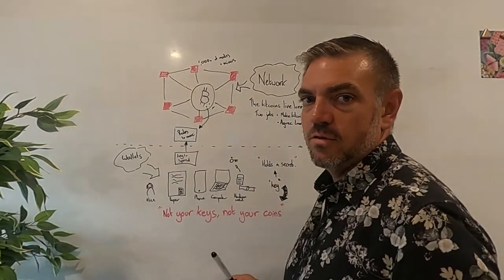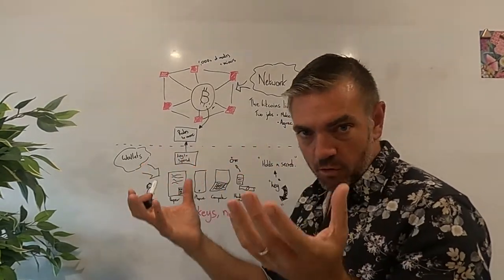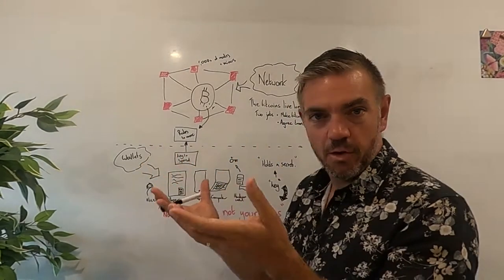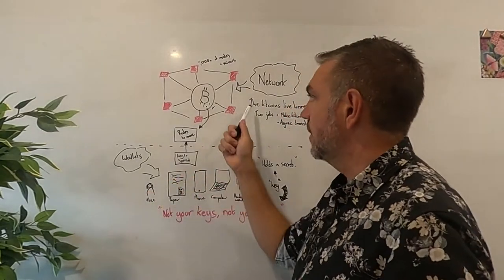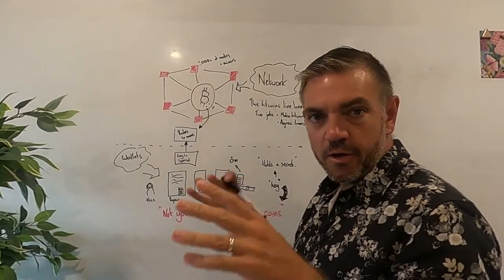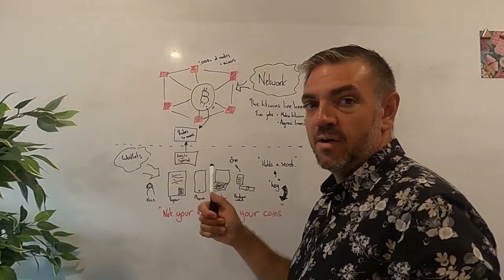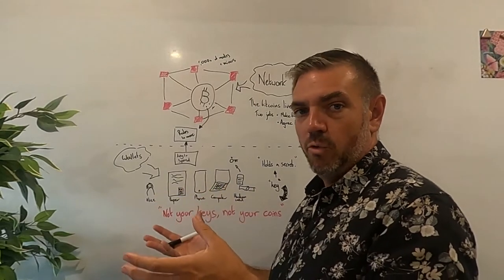Now, each of these has a job. The job of the network is to own all the Bitcoins. This is where they all live, and it's to make sure that it follows a certain set of rules. So there are hundreds of thousands of computers all over the world checking each other's work and making sure that everybody on this network, where all these Bitcoin live, are actually following the same rules.